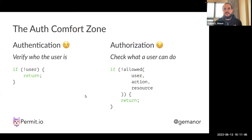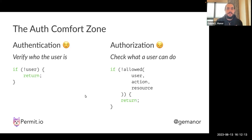The reason there are so many authentication tools is that they let developers write very simple code — given a user object, verify if a user can or cannot do something. But getting to authorization and doing the same kind of simple if-statement check — if user, action, resource is allowed — is much more complex. There are not many tools like that, and if developers want to build authorization themselves, it's very hard.